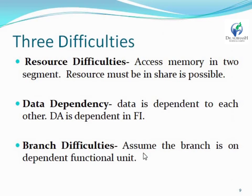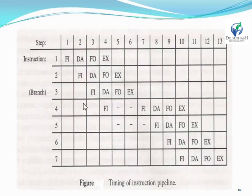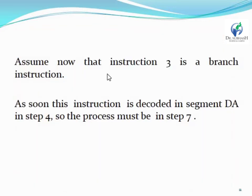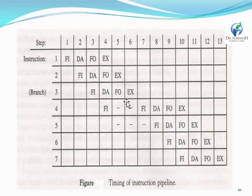The final difficulty is branch difficulty. Branch depends on functionality — if any functionality will be dependent on each other, the process will not be executed in the memory fetch phase. For example, assume instruction 3 is a branch instruction. As soon as the DEA segment is decoded in step number 4, the next process must start at step number 7. The DEA will have branch difficulty — at that time the process will be completed at step 7, so the next process always starts at step 7, not at step 4. This is the branch difficulty.